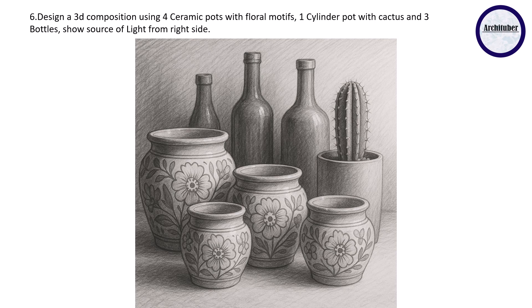This year they have asked such kind of questions so many times: design a 3D composition using four ceramic pots with floral motifs, one cylinder pot cactus, and three bottles. Show source of light from right side. If you see they've done four vases which have flower motifs, three bottles with glass effect which we discussed in the earlier question. You have to try all of such kind of questions so you'll be prepared for your examination. Look how beautifully they have shown the motifs over here, how beautifully they've given the detail of this cactus. Even the material - the glass can be seen. This is like ceramic so they have little highlighting elements but at the same time detailing is very nicely done.